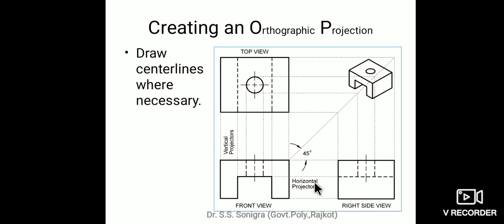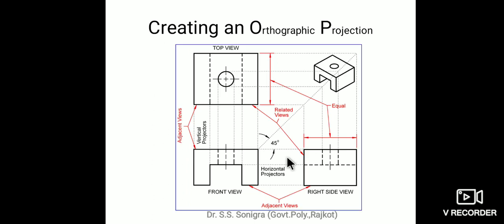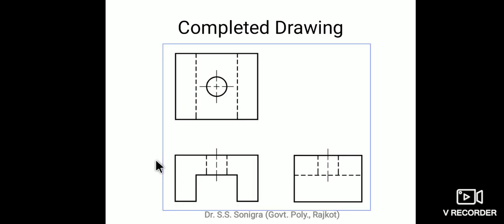This is the final answer for that object. Now create an orthographic projection of this next object — these are the related adjacent views. Both widths are equal; this width and this height are equal. This is the complete drawing of the given object.